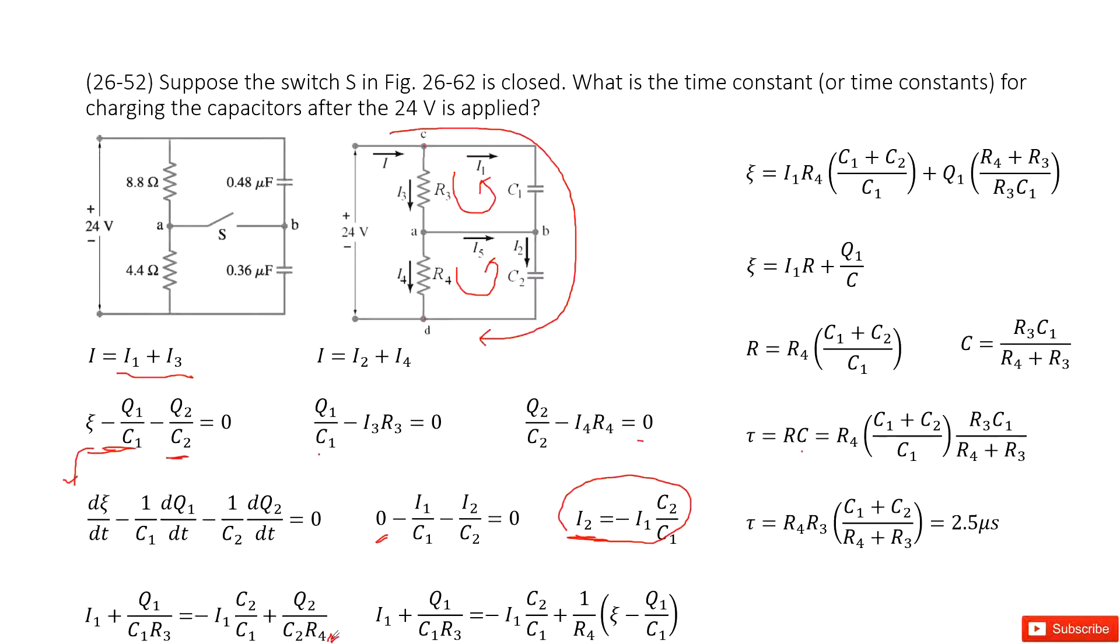The next one, we need to find Q2 over C2. So Q2 over C2, how can we do that? Q2 over C2 is V2. And this V2 can be written as epsilon divided by V1.